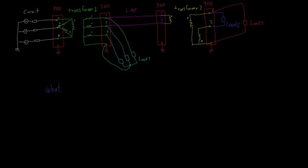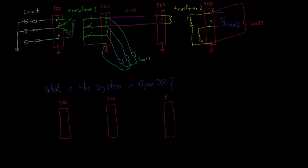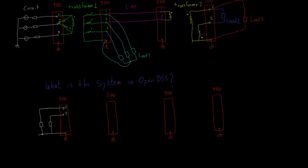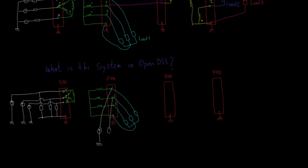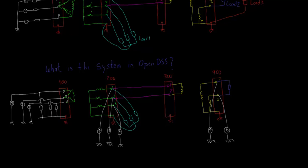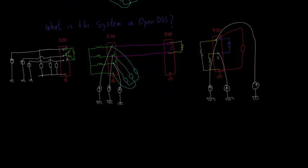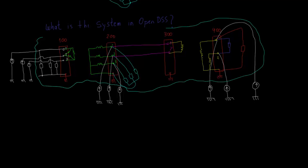First, we need to understand how OpenDSS interprets the system. It basically converts all the power conversion element models to a different model. For example, the circuit element is represented with its Norton equivalent model, and the loads are broken into two different parts: one stands for its linear behavior, represented as a fixed or constant impedance, and the second one is a current source which represents the load's nonlinear behavior. This current is known as compensation current, and its calculation depends on the load's model chosen by the user — for example, constant power, constant current, and constant impedance. The system contains all the elements within the light blue boundary.